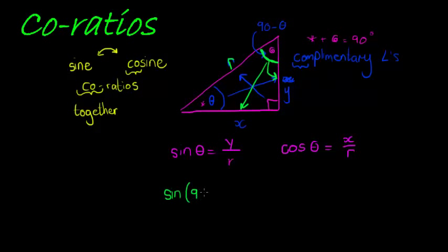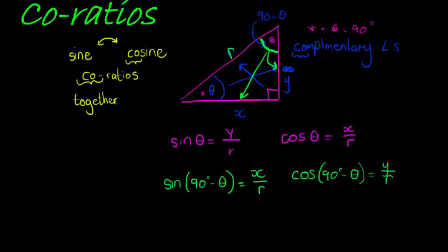So if I look at the other angle, which is now whatever 90 minus theta is, then I get that sin is equal to x over r. And if I take cos of 90 degrees minus theta, I find that cos is adjacent over hypotenuse, so this time cos is y over r.